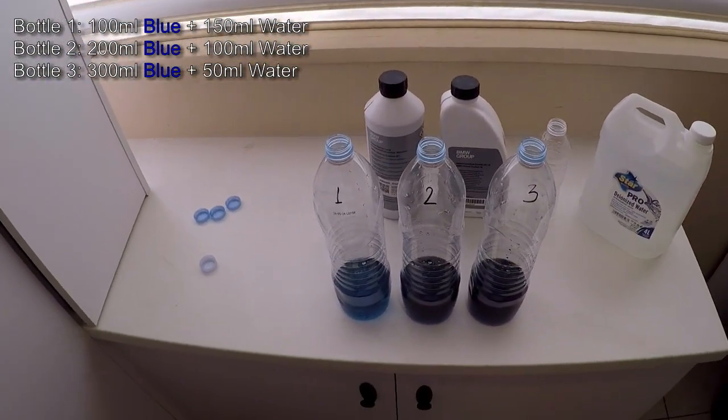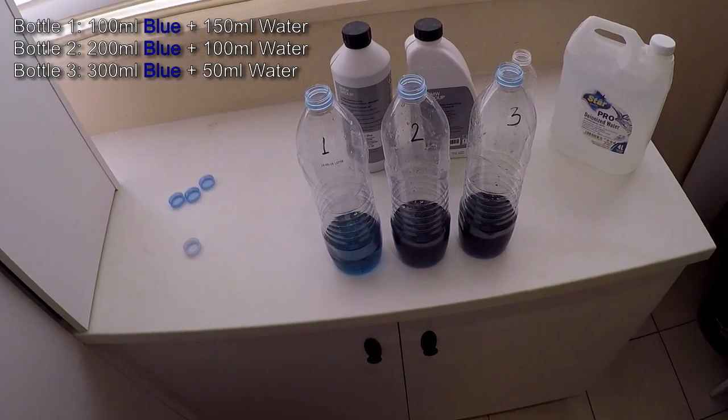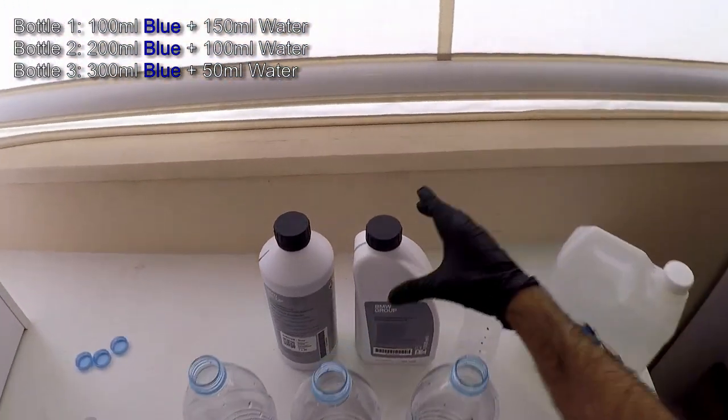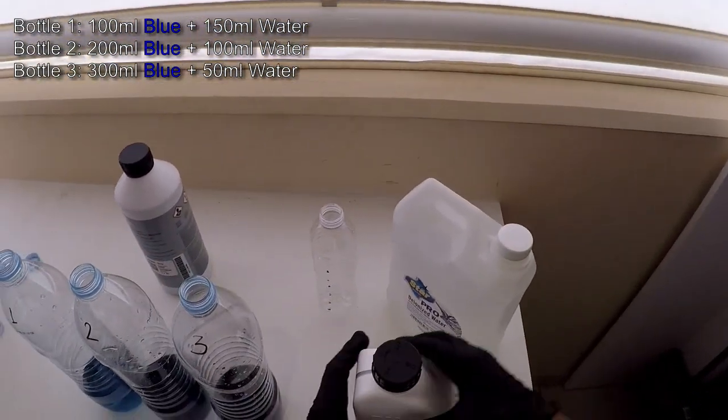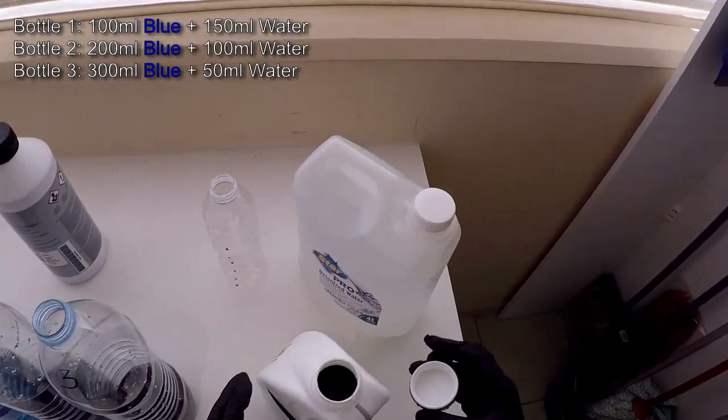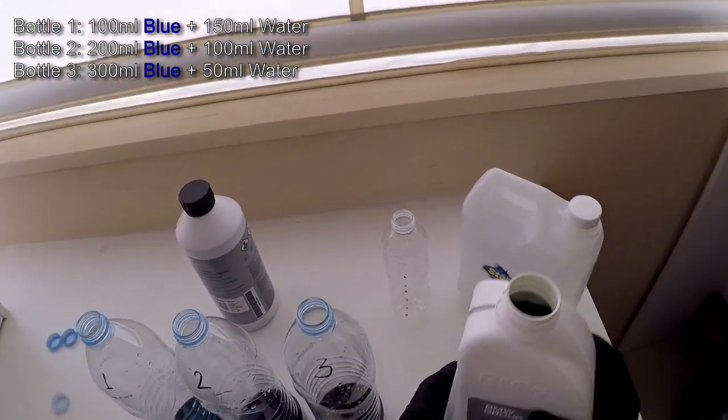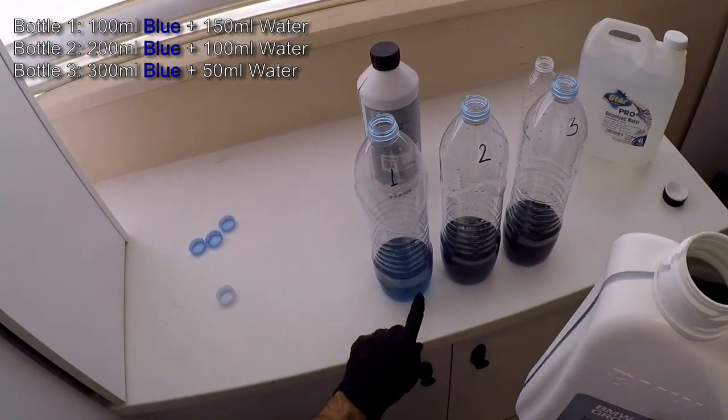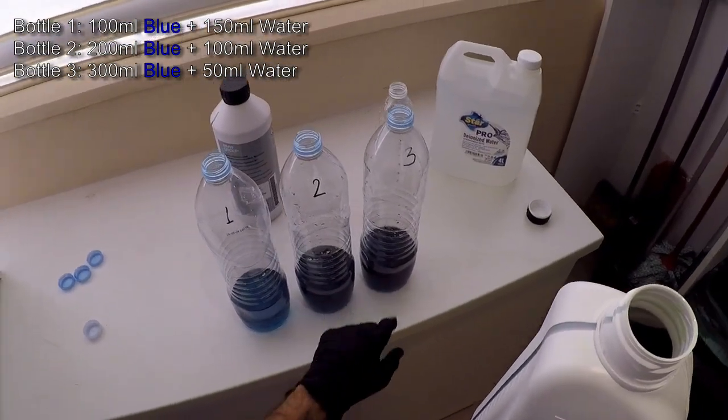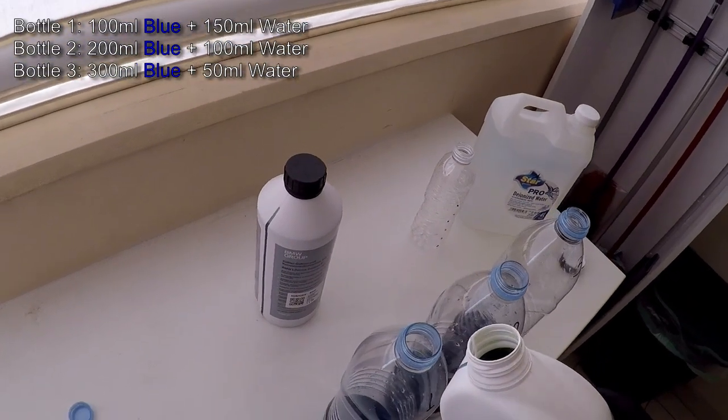So now we have the blue coolant plus the water element that we would have added with the green antifreeze. All that's left is to put in the antifreeze. We will start off with bottle one. We're just going to top it off to these lines, these lines represent 400 ml, and hopefully we don't spill it everywhere.